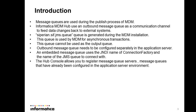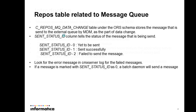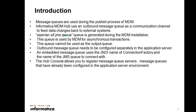JMS Message Queue acts as a communication channel between MDM and the external application. While installing MDM, you would have noticed there will be a queue named Siperian.sif.jms.queue which gets generated. This queue is used by MDM for all synchronous transactions. It is also known as an inbound queue in MDM. You should not use this queue as an outbound queue.